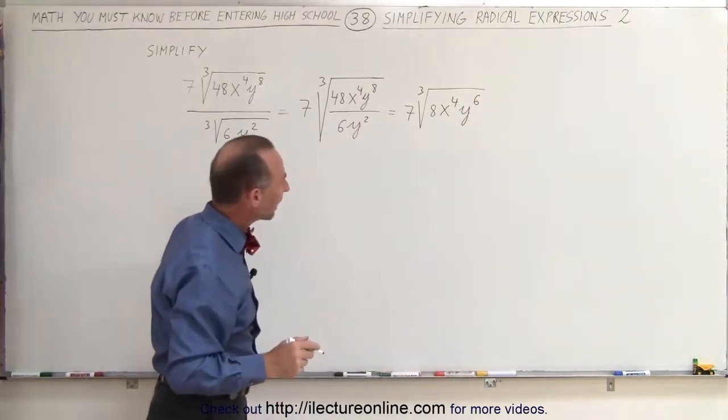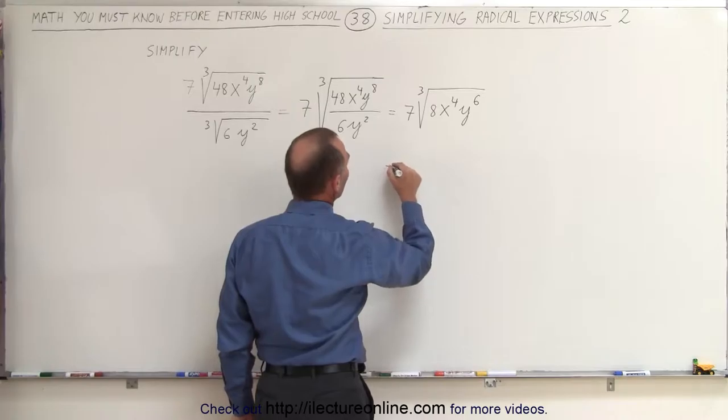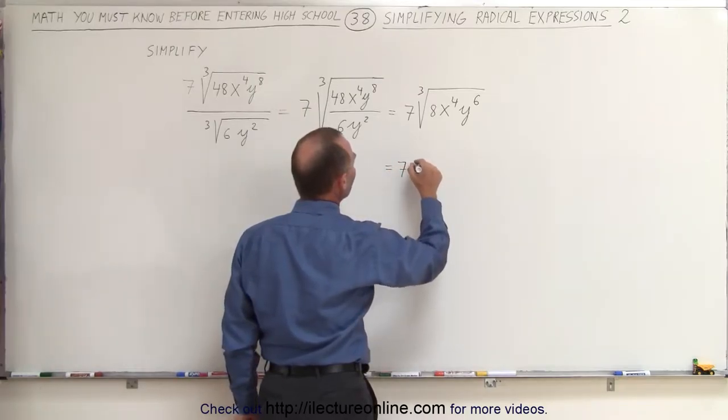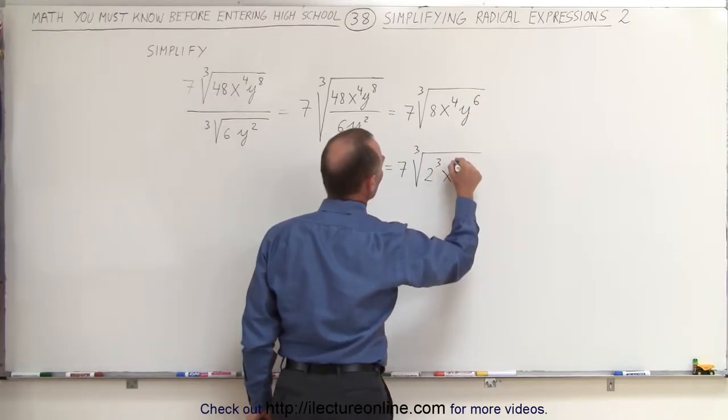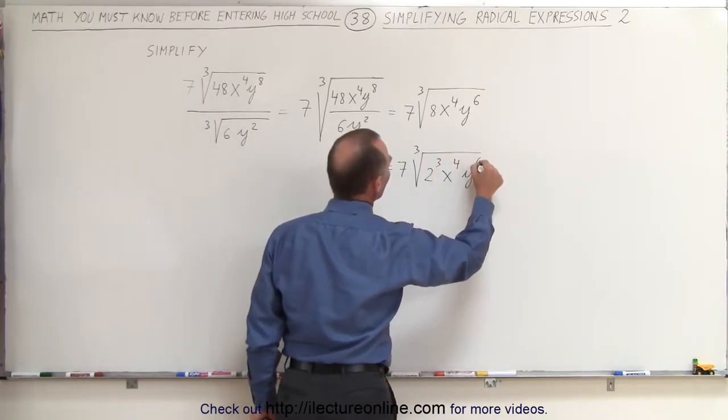Next, what we can do is simplify this. Notice that 8 can be written as 2 cubed. So this is equal to 7 times the cube root of 2³x⁴y⁶.